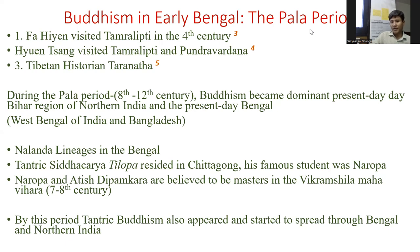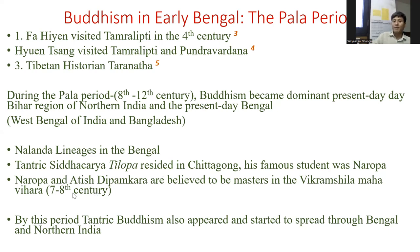During the Pala period, the great Tantric Siddhacharya Tilopa resided in Chittagong. His student Naropa later became prominent in the Tantric tradition of Tibetan Buddhism. Naropa and Atisha Dipankara both are believed to have been masters at Vikramshila Mahavihara in the 7th to 8th century, indicating that Tantric Buddhism appeared in Bengal as well as in Northern India during this period.